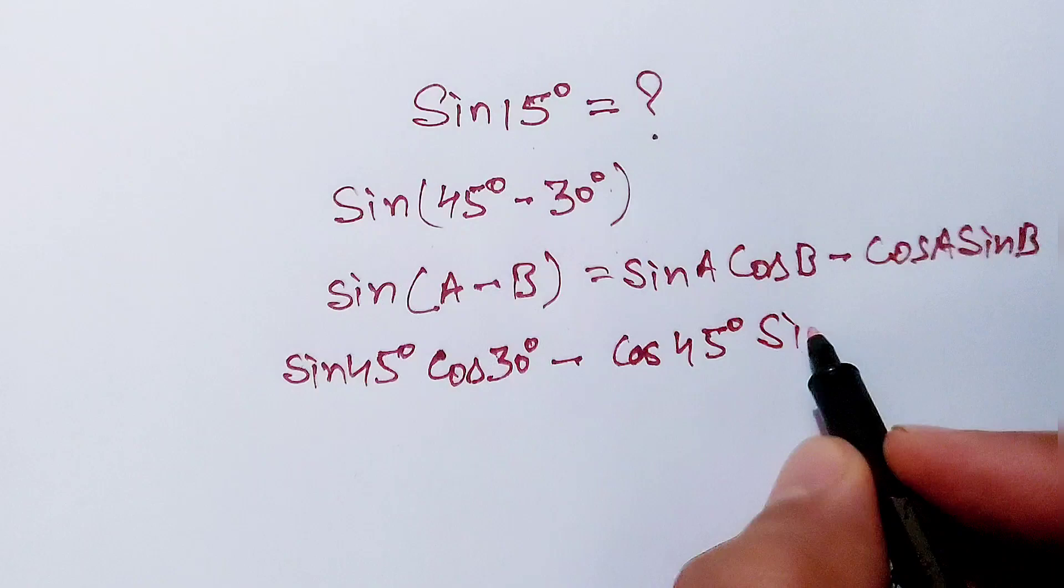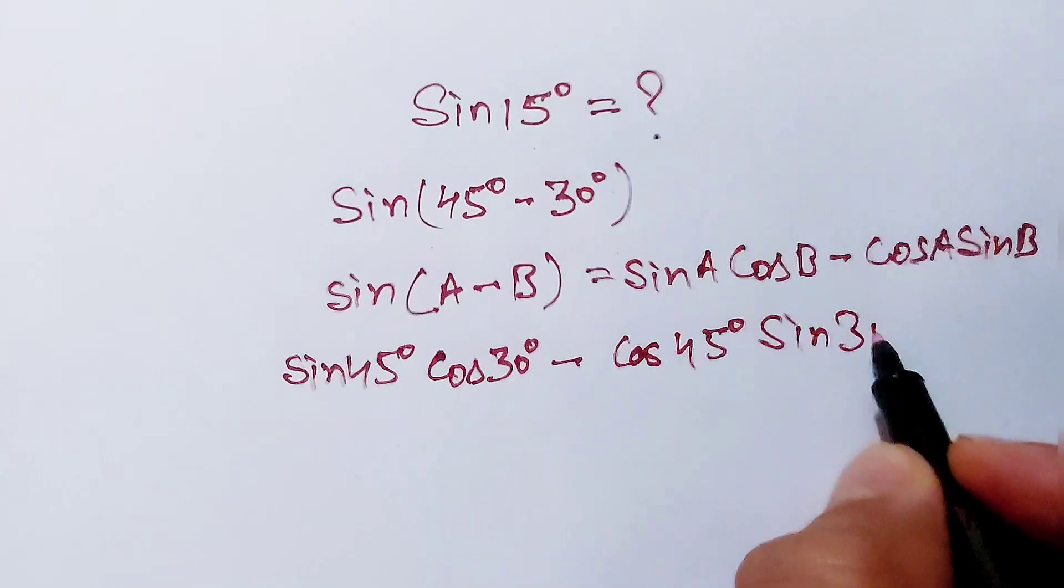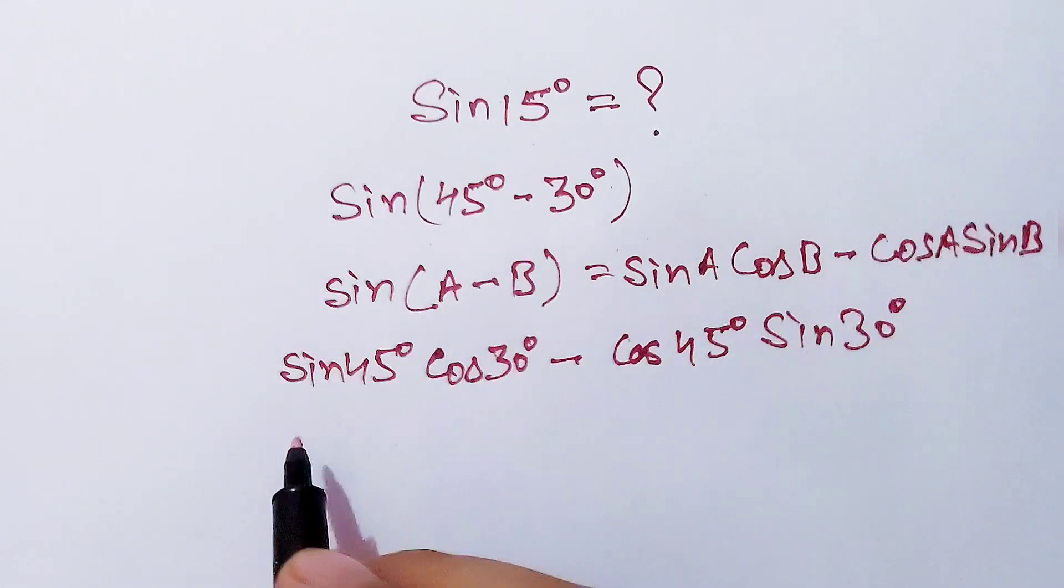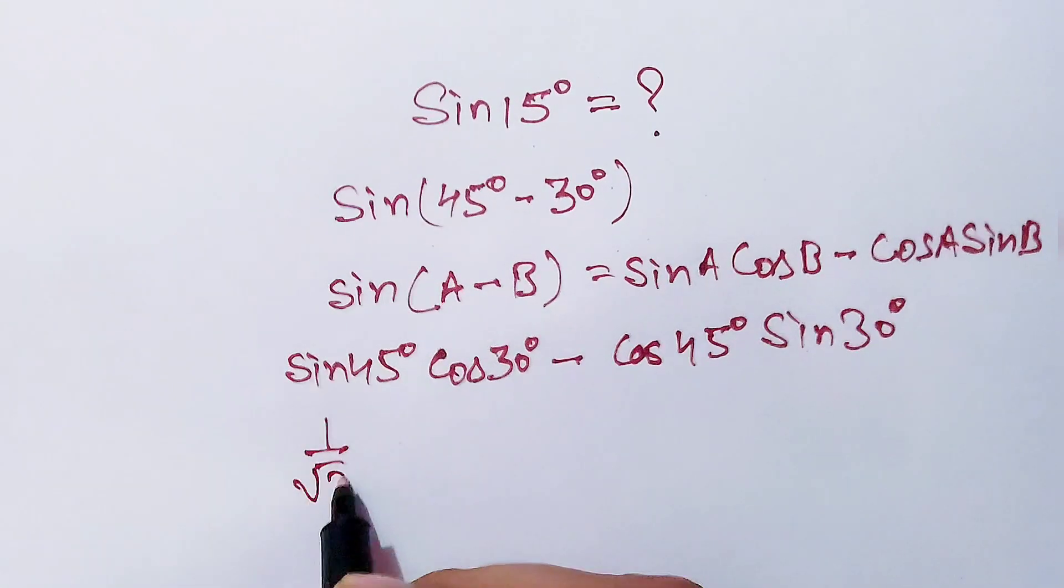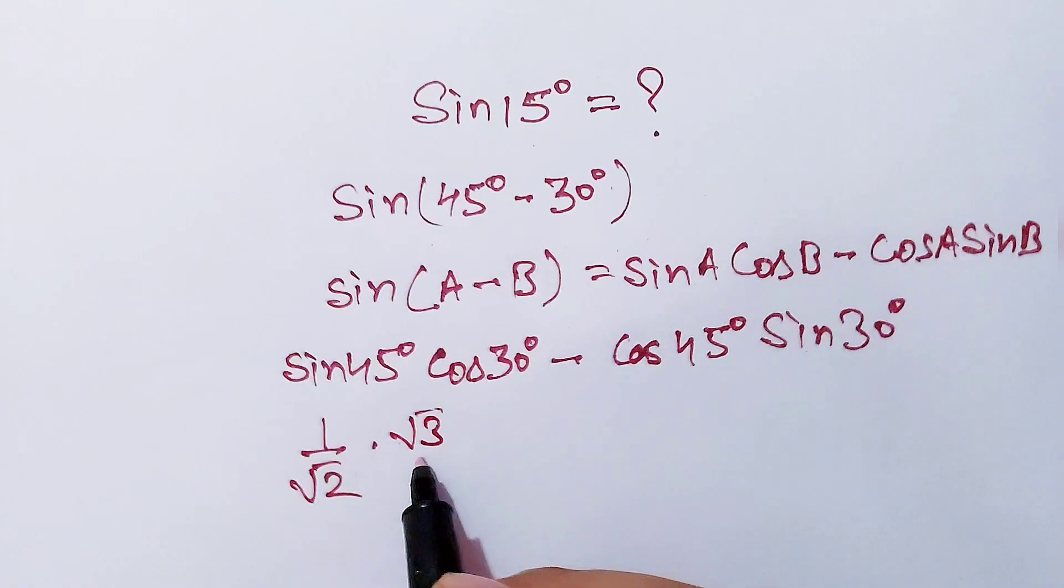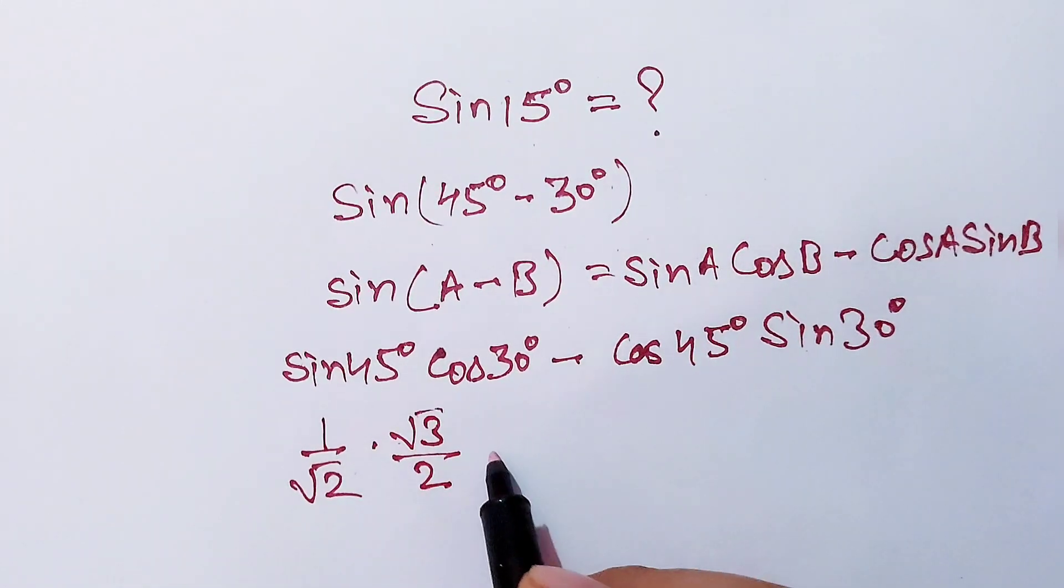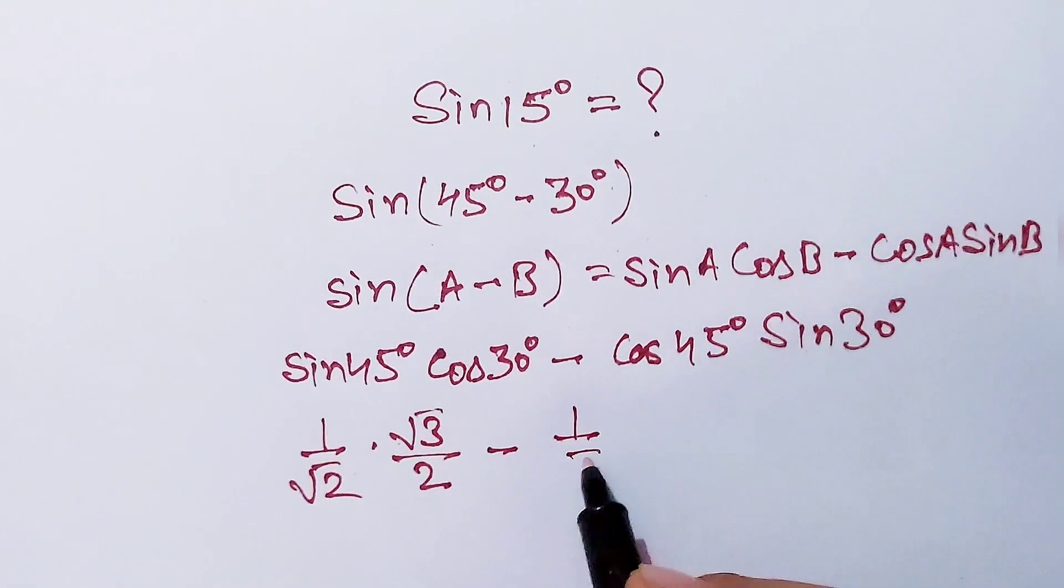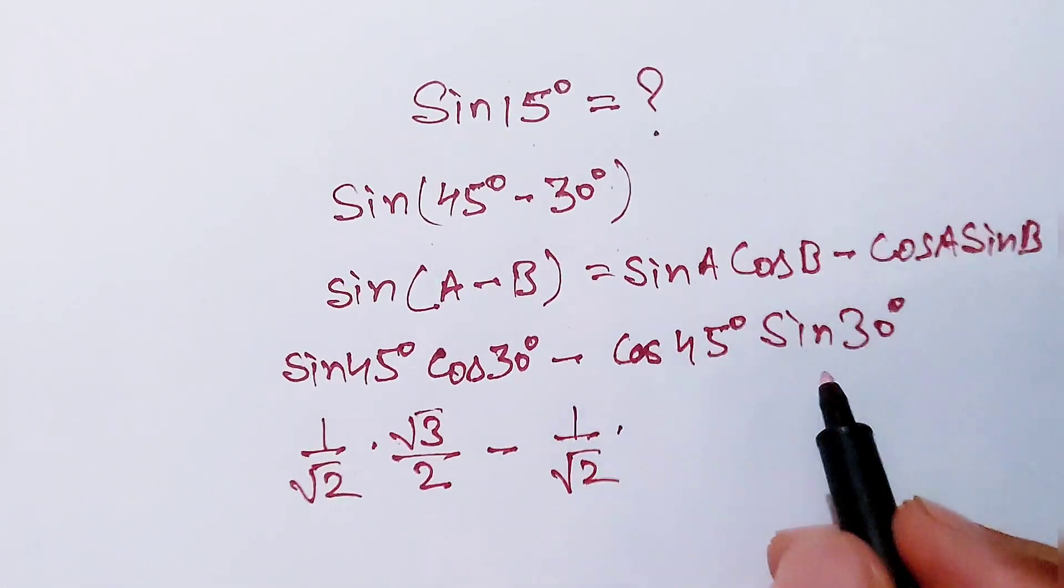Now sine 45 degrees is equal to 1 over root 2, times cos 30 degrees is equal to root 3 over 2, minus cos 45 degrees is equal to 1 over root 2, times sine 30 degrees is equal to 1 over 2.